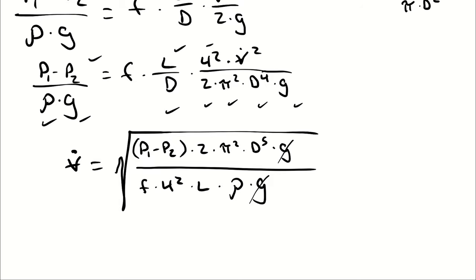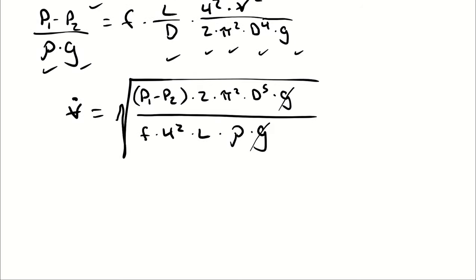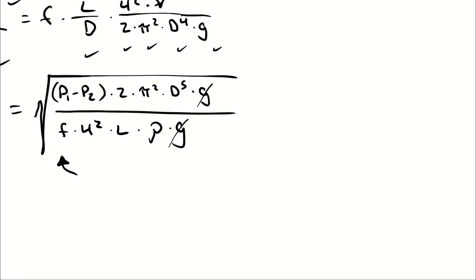To calculate Q, we need a value for F. There are two equations: one for laminar flow and one for turbulent flow. To proceed, we need to know whether flow is laminar or turbulent. For internal pipe flow, Reynolds number below 2300 means laminar; above 2300 means turbulent.